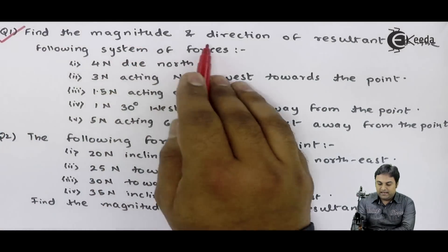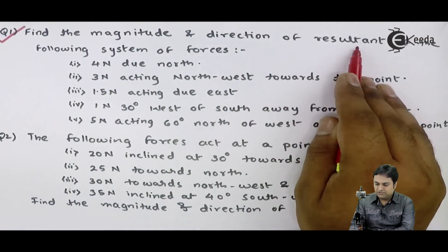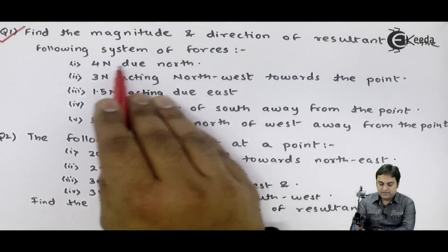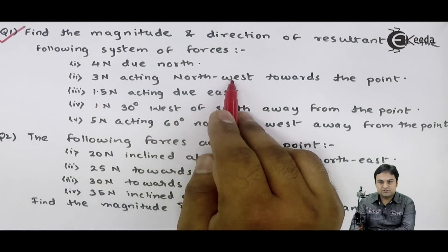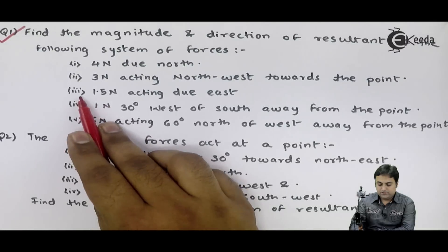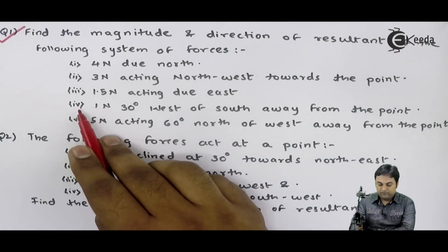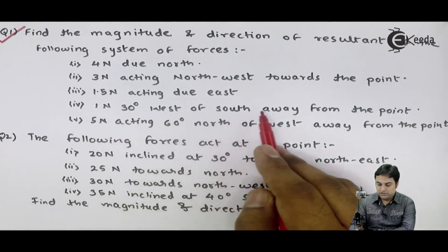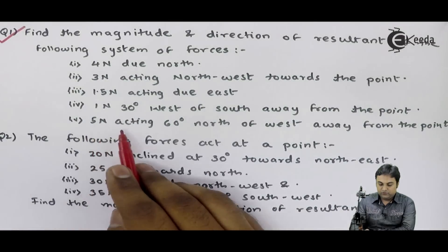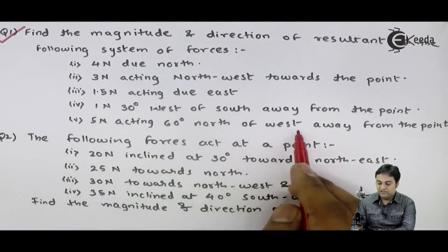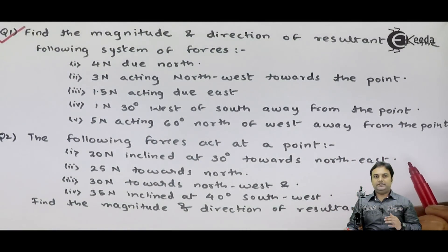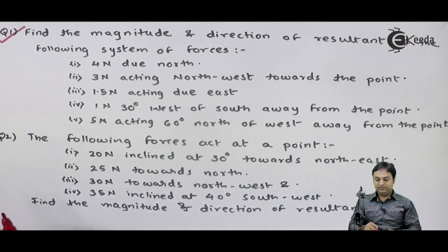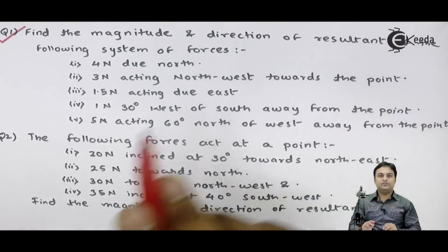Find the magnitude and direction of the resultant of the following system of forces. First force: 4 Newton due north. Second: 3 Newton acting north-west towards the point. Third: 1.5 Newton acting due east. Fourth: 1 Newton 30 degrees west of south away from the point. And last: 5 Newton acting 60 degrees north of west away from the point.